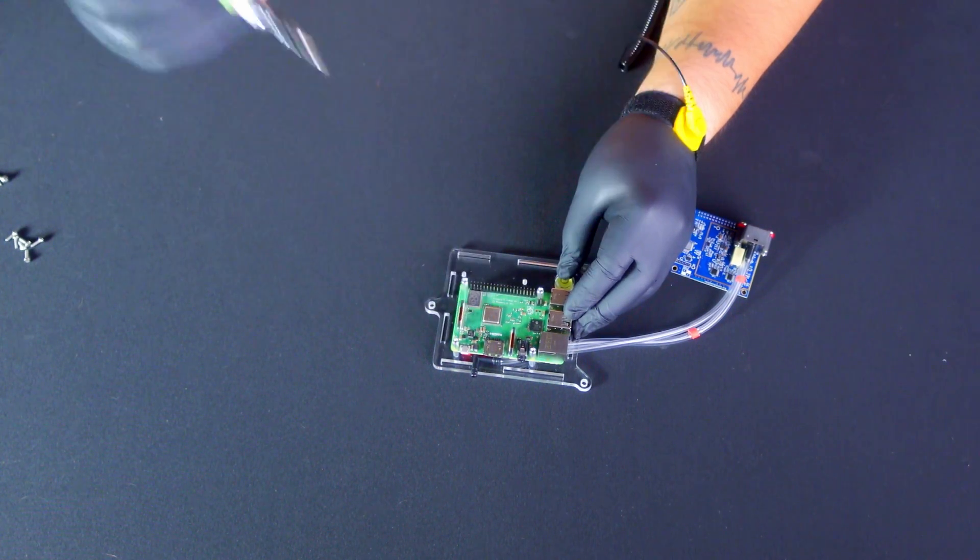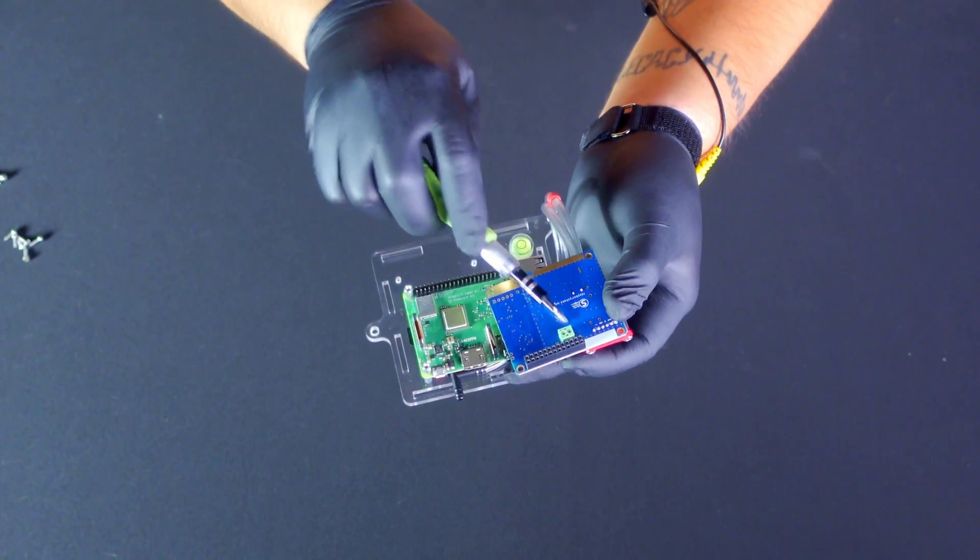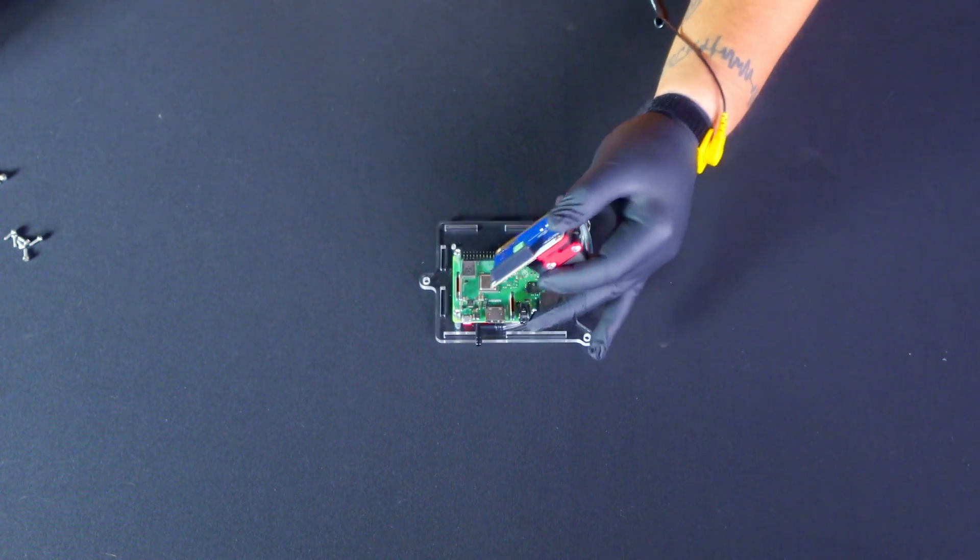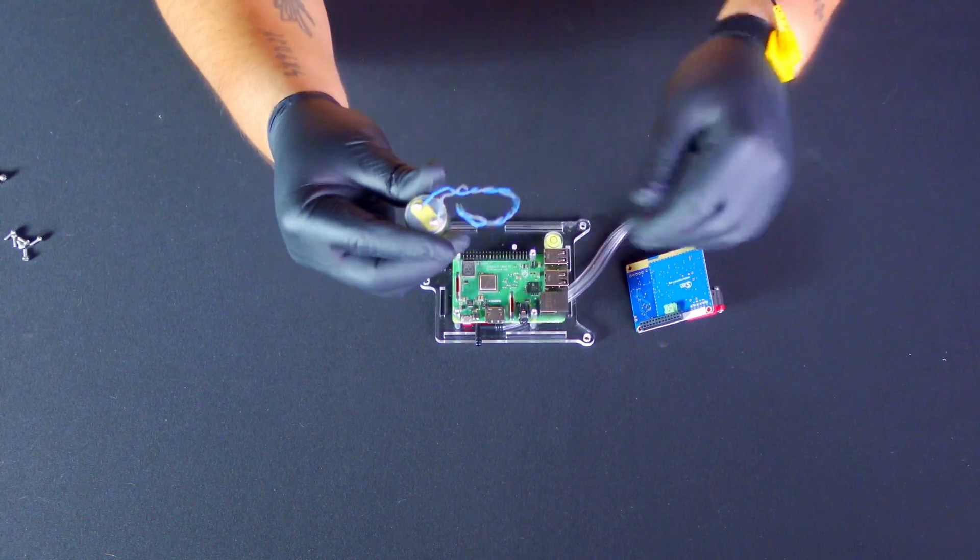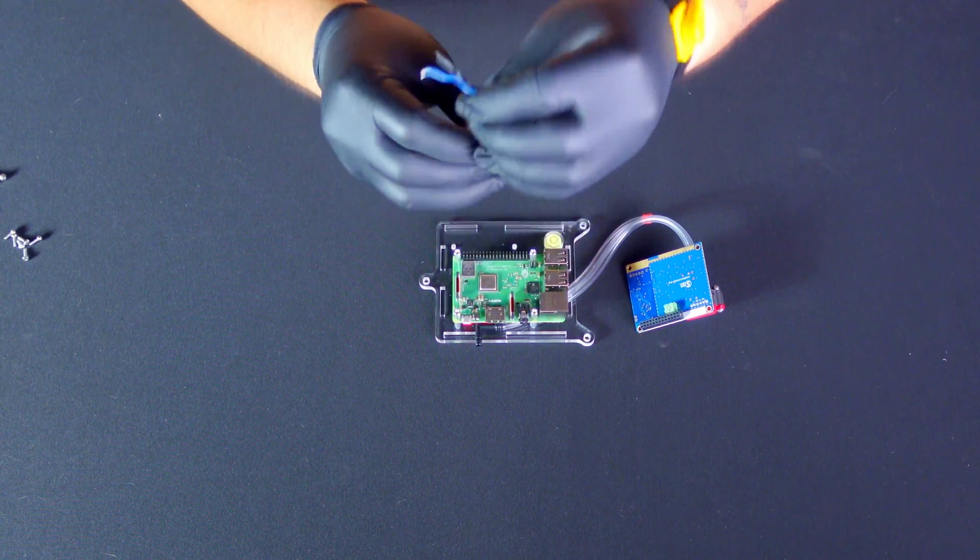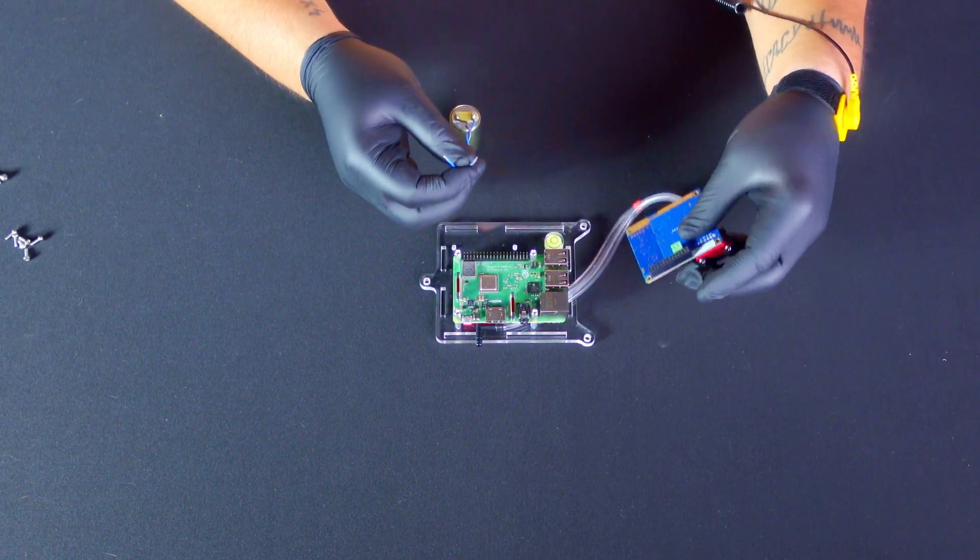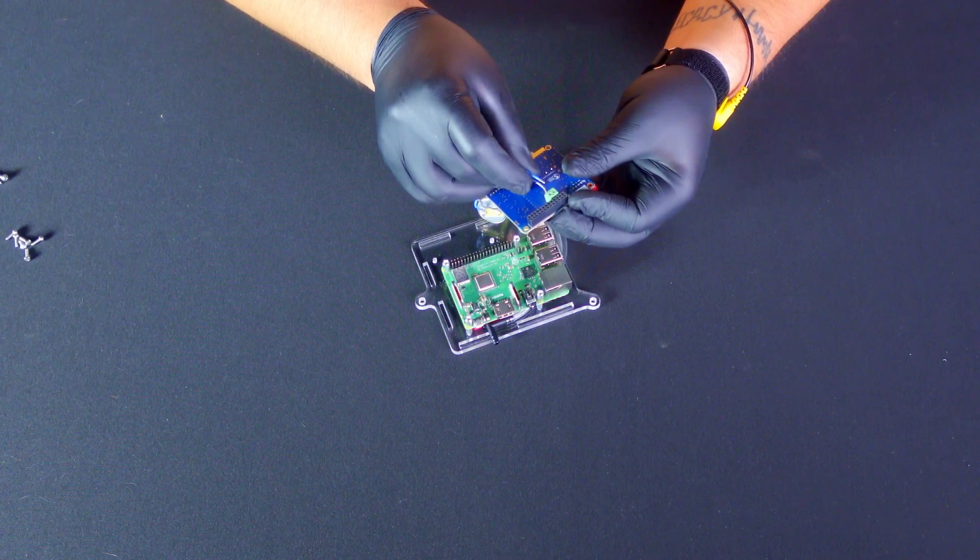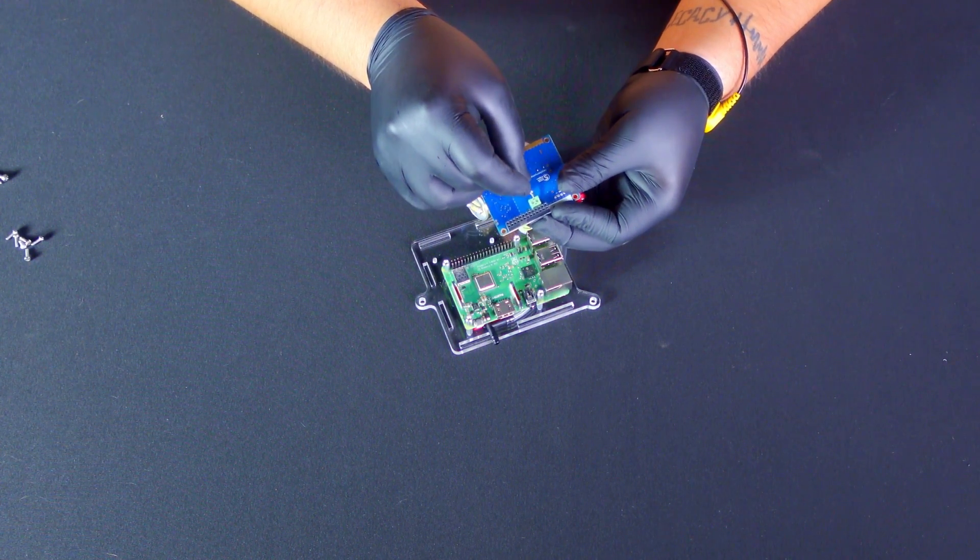After this, take the blue Raspberry Shake board and attach the GeoPhone sensor cables to the back of the board. Insert the sensor cables into the holes as indicated, ensuring the grey cable goes into the hole marked with the positive sign and the blue cable into the negative sign. Secure them in place using the fine-point Phillips screwdriver.